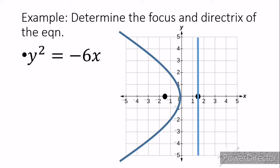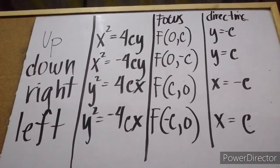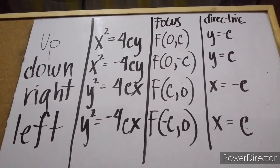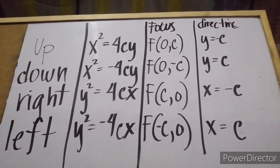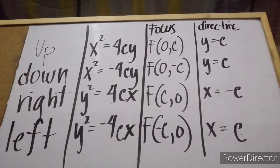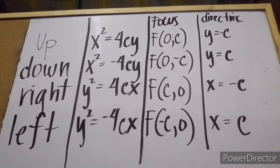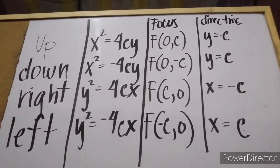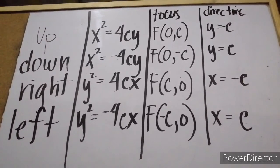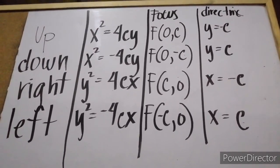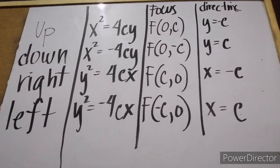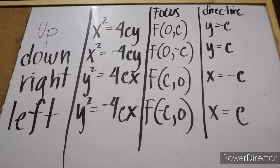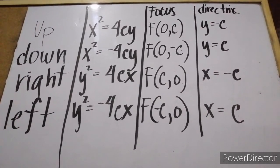Let's summarize our discussion by looking at this table. We have summarized the differences when the parabola opens up, down, right, and left — including where the focus is located (at the y or x coordinate) and the equation of the directrix (y or x equal to positive or negative c). I hope you learned a lot from my video! Don't forget to click subscribe and hit the bell to be notified of my next update. Up next, I'm going to show you how to find the focus and directrix when the vertex is not at the origin.